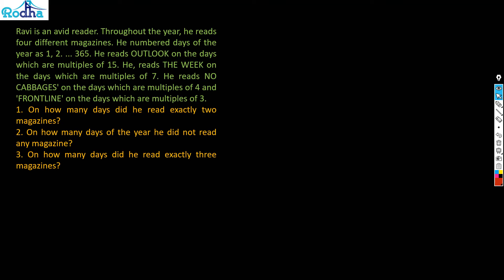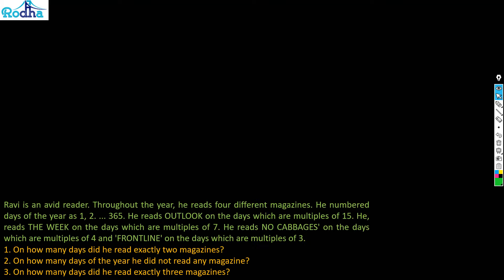There are three questions to follow. Try this set for at least 15 minutes to get the correct answer. Now let's discuss this set. Since there are multiple overlapping conditions between the number of days of different magazines, this is clearly a Venn diagram problem.